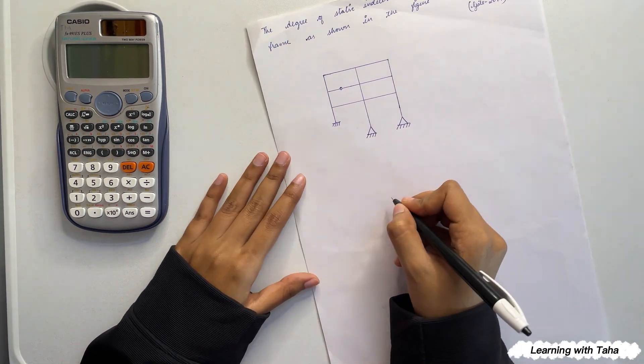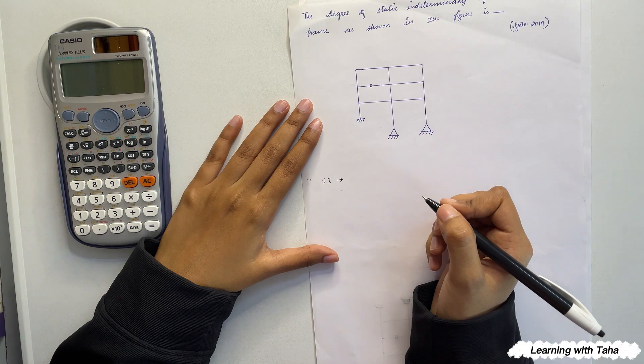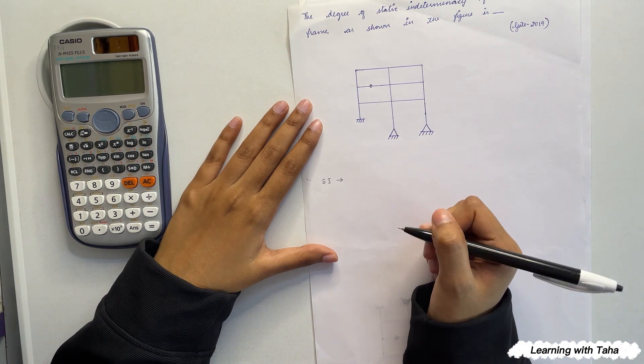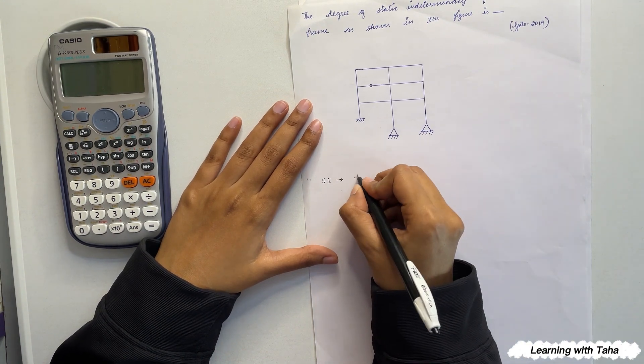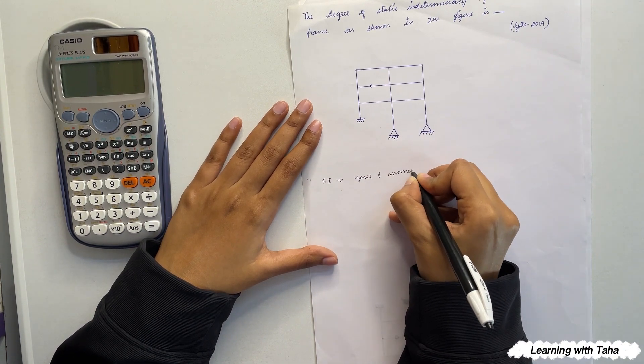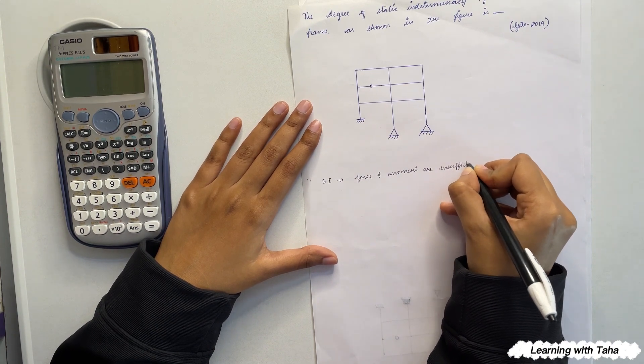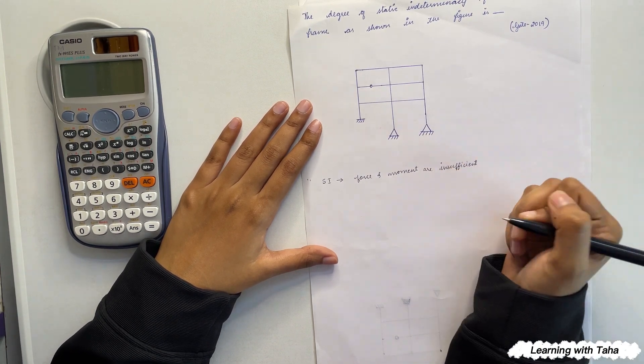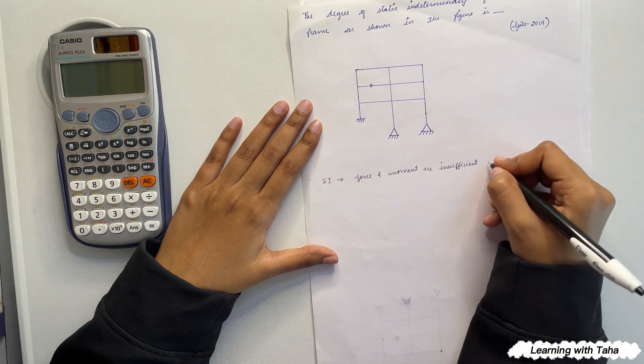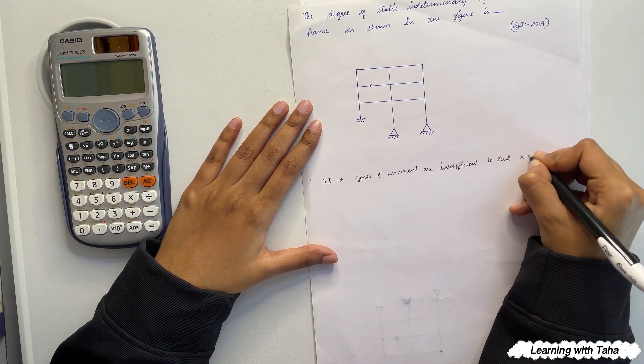Basically, static indeterminacy occurs when static equilibrium equations of force and moment are insufficient to find out the reactions and are insufficient to find reactions.